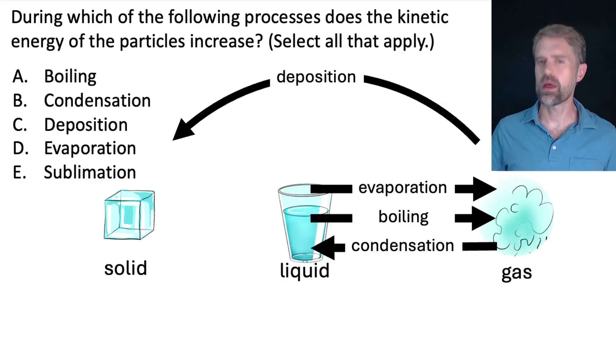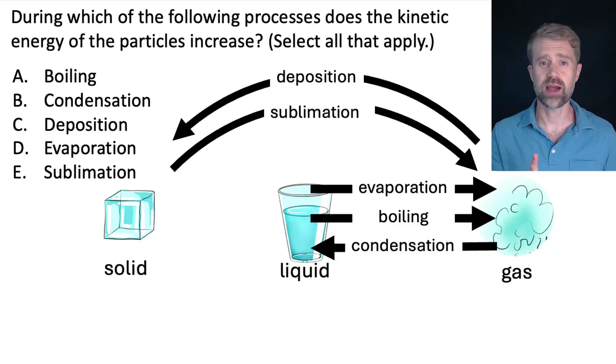Evaporation. That's another name for when liquid turns to gas. The TEAS might talk about boiling. They might talk about evaporation. They're both liquid to gas. And finally, sublimation. This is when solid turns directly to gas without passing through liquid in the middle.